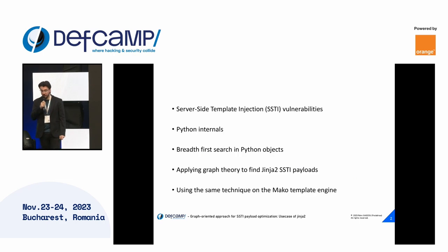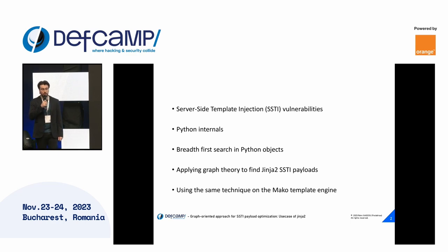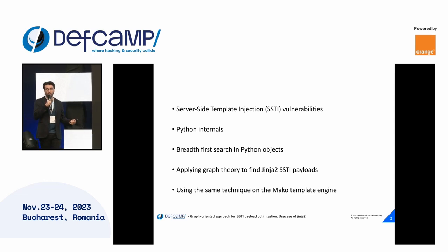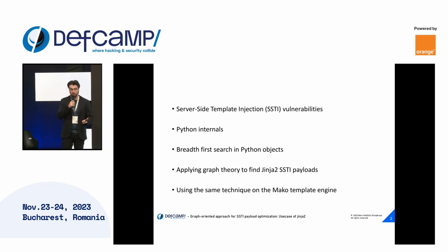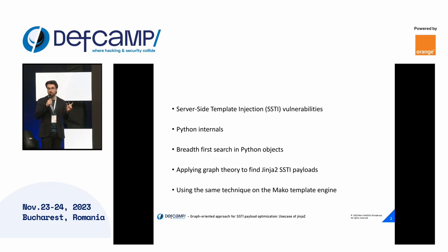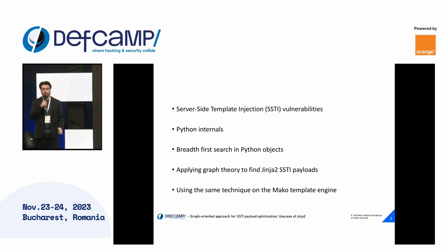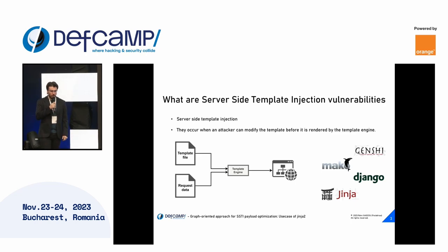Server-side template injection vulnerabilities are a class of attacks that we've seen for more than 10 years now, across a lot of technologies. We're going to deep dive into Jinja2 because it's the most widely known, used in CTFs, and seen in lots of places. First we'll check out what SSTIs are, how Python internals work, how we can use introspection to optimize payloads, how to apply graph theory to find the shortest payloads possible, and at the end I'll give a teasing on the same technique for a macro engine used by Reddit.